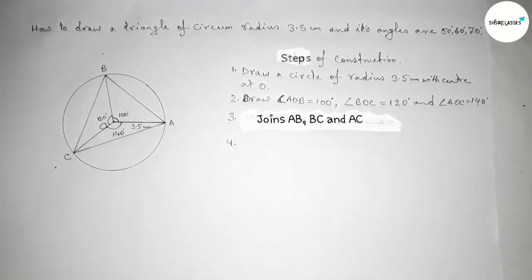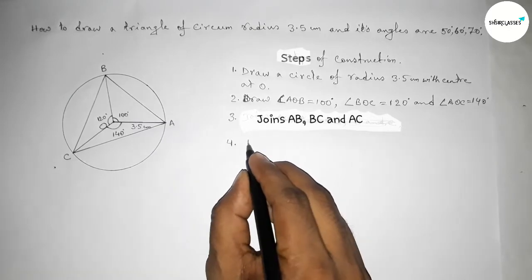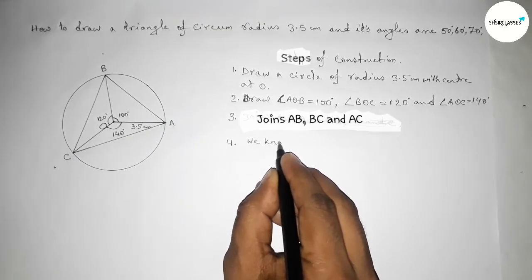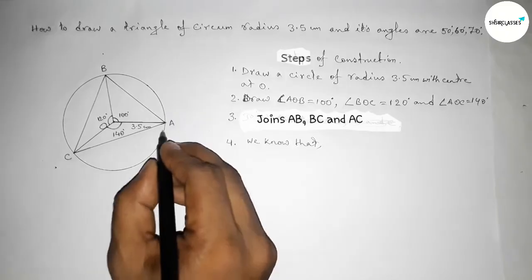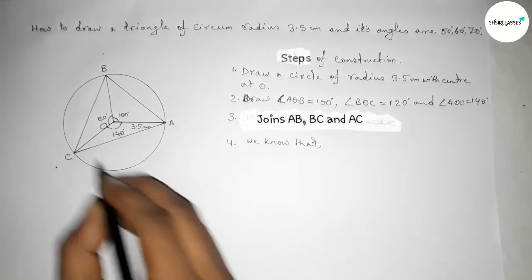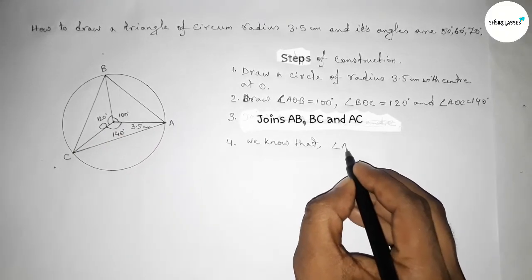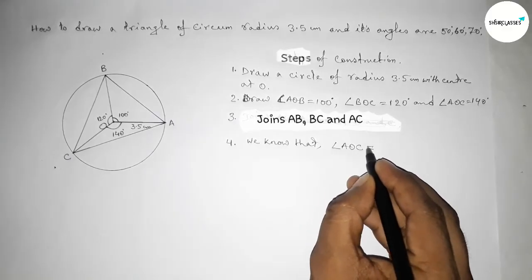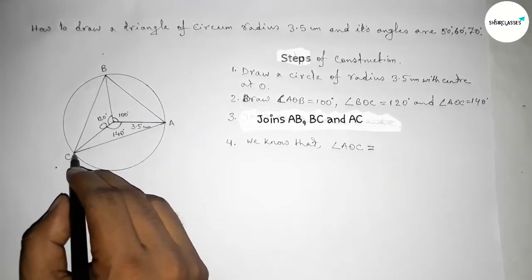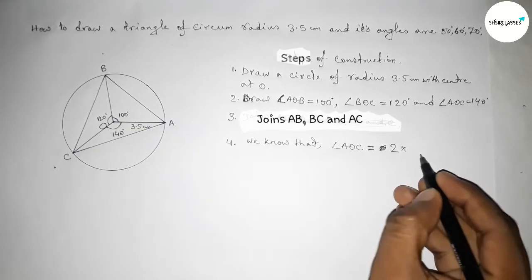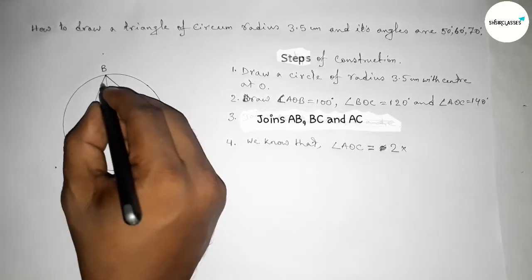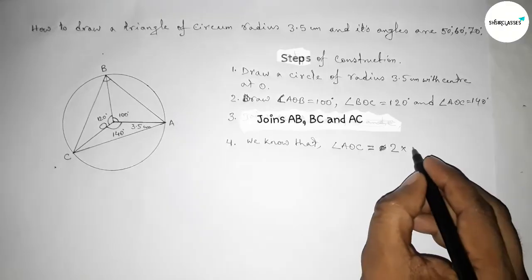Step number four — some important calculation. We know that the angle at the center is twice the angle on the circumference. That means angle AOC equals two times angle ABC.